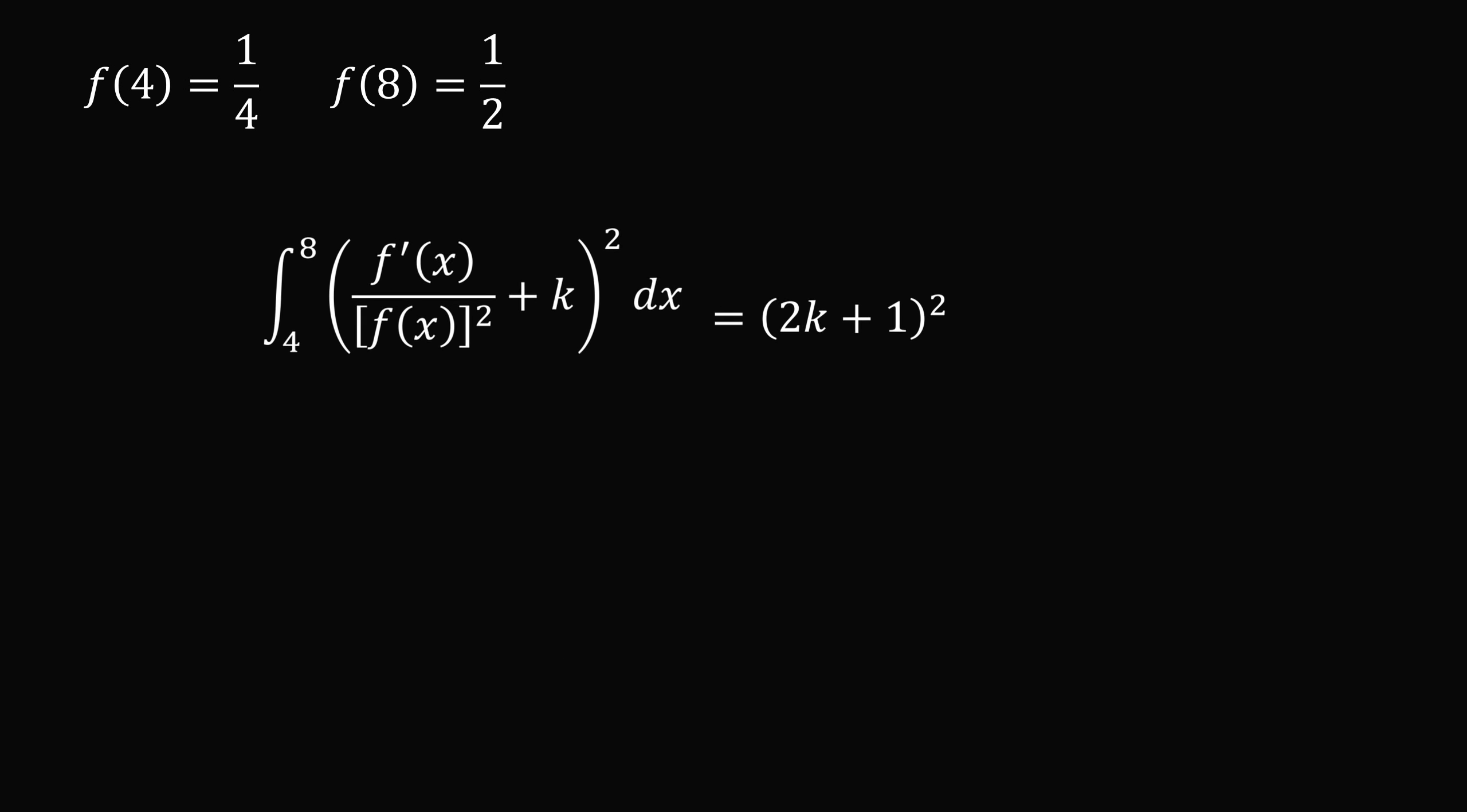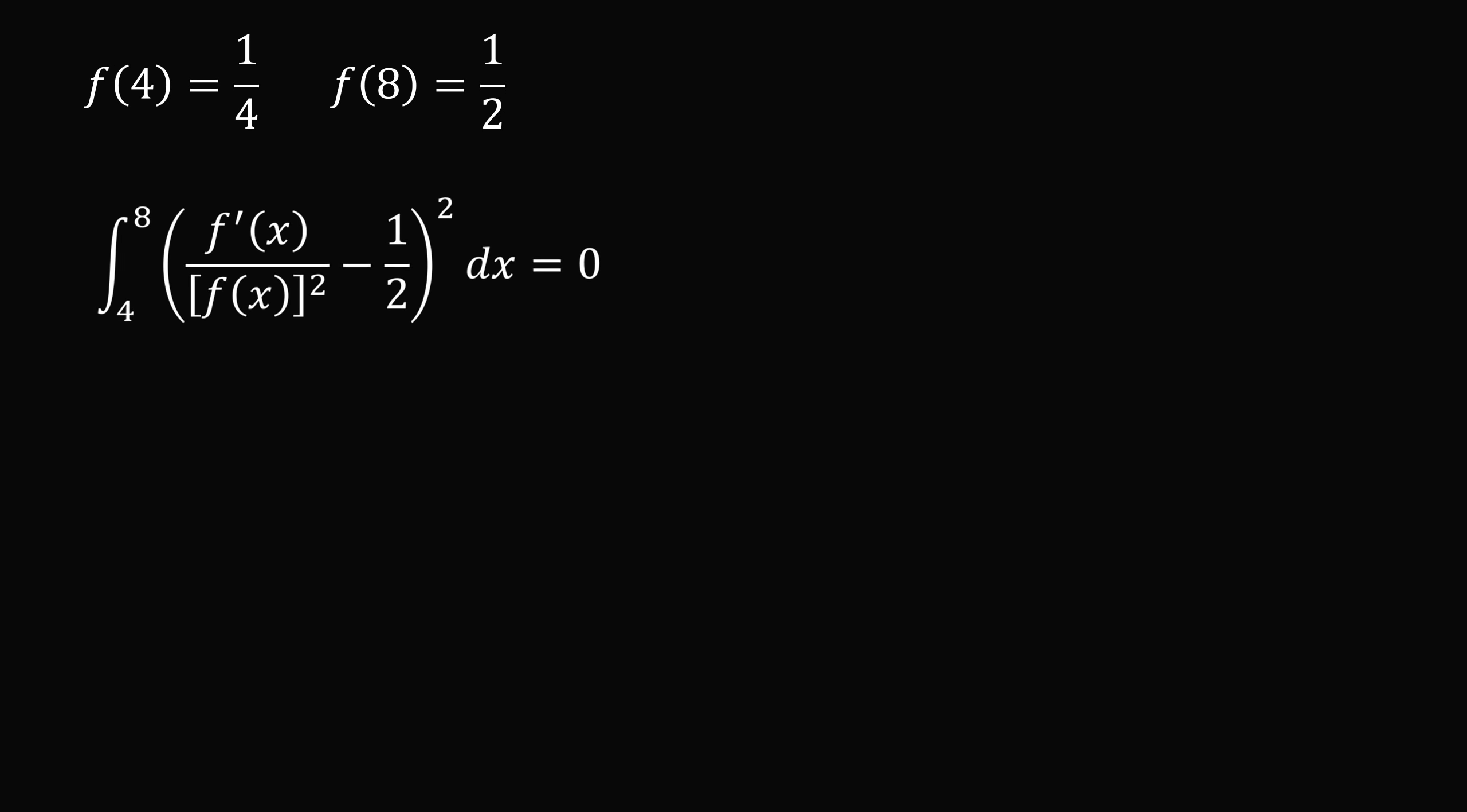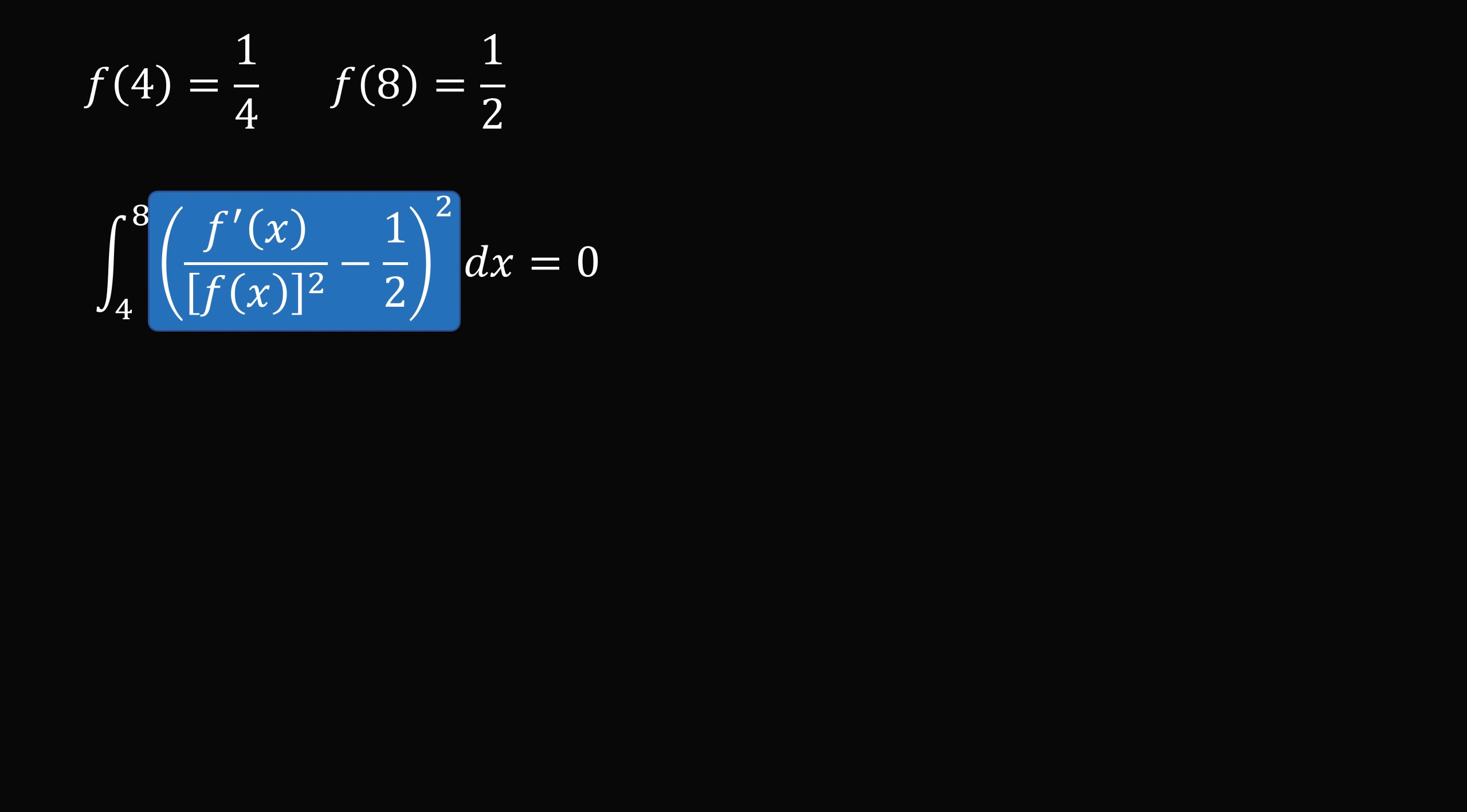Now, let's pick a special value of k. Let's let k be equal to negative 1 over 2. This means 2k plus 1 will be equal to 0. So we substitute in. Now, what can we deduce? We know the square of any real valued function will be non-negative. But we have that this integral is equal to 0 exactly. This is only possible if the integrand is identically equal to 0.